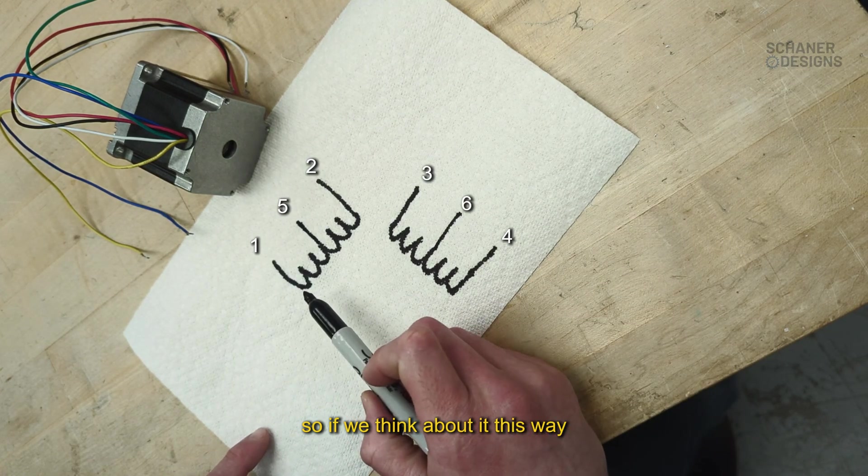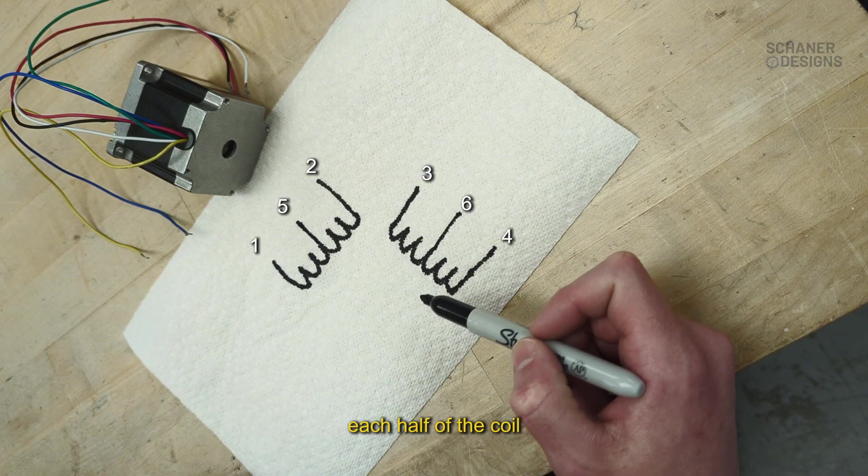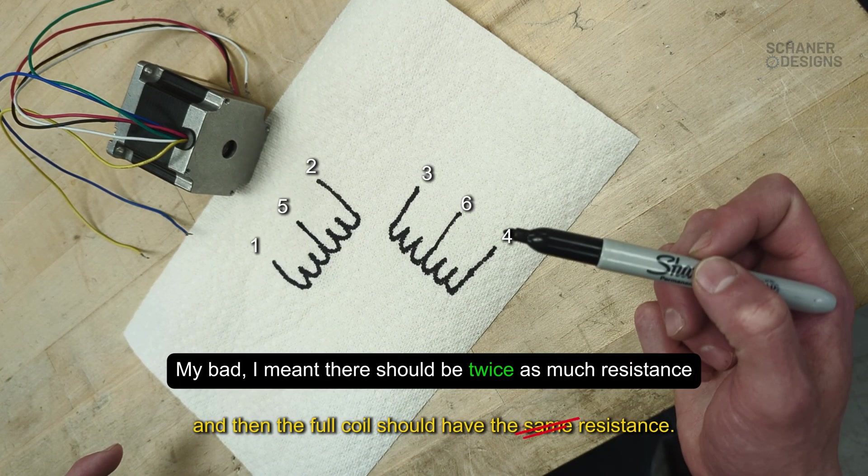If we think about it this way, we should have equal resistance on each half of the coil, and then the full coil should have the same resistance.